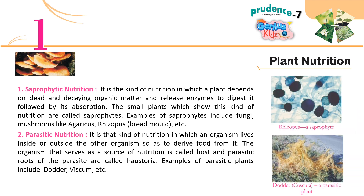1. Saprophytic Nutrition: It is the kind of nutrition in which a plant depends on dead and decaying organic matter, releasing enzymes to digest it followed by absorption. The plants which show this kind of nutrition are called saprophytes. Examples of saprophytes include fungi, mushrooms like Agaricus, Rhizopus, bread mold, etc.